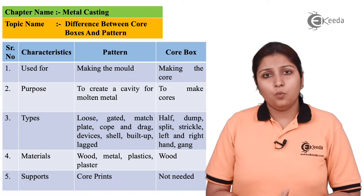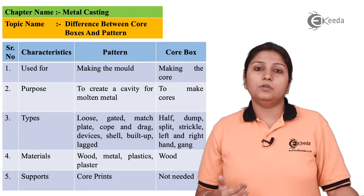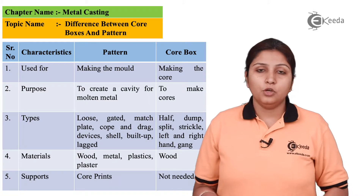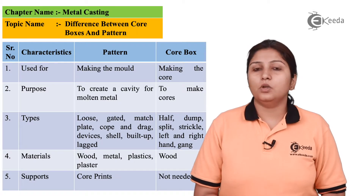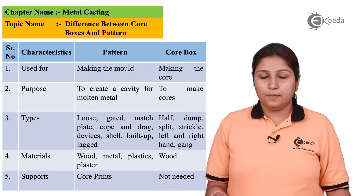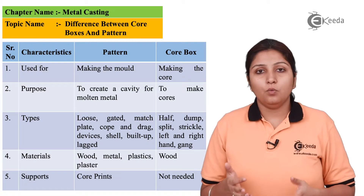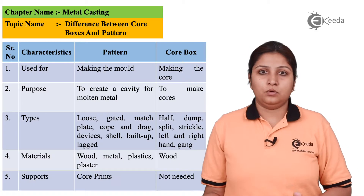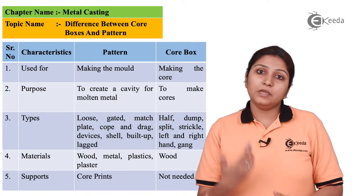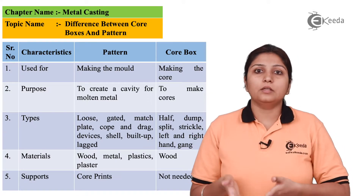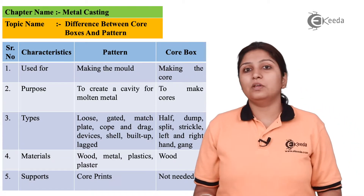When we talk about use — why a pattern is used and why a core box is used — a pattern is used for giving shape to your mold. Your mold comes in raw form and you need a pattern, whether you are making a mobile cover, a rod, or any shape. Core boxes are specifically used for making cores, because a pattern needs a core, especially for a complex object. The core box is essentially a different pattern used to create that core.